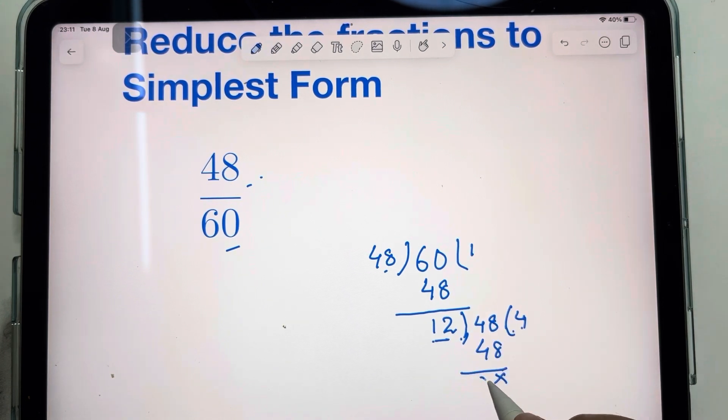12 times 4 is 48. Now remainder is 0. So highest common factor is 12.